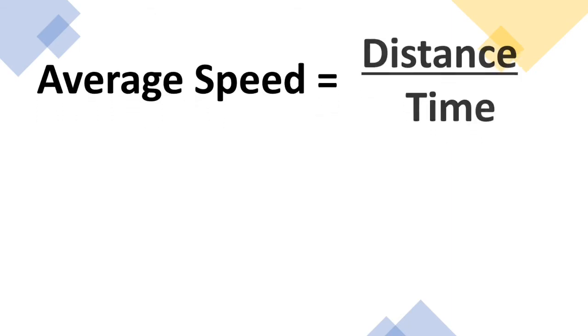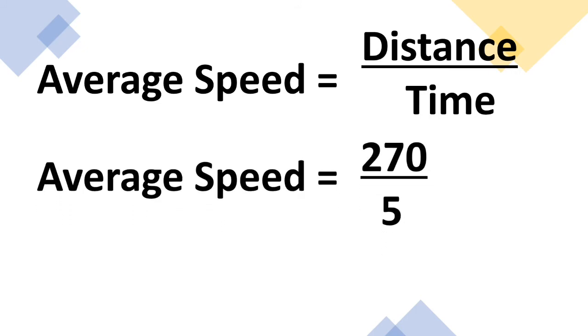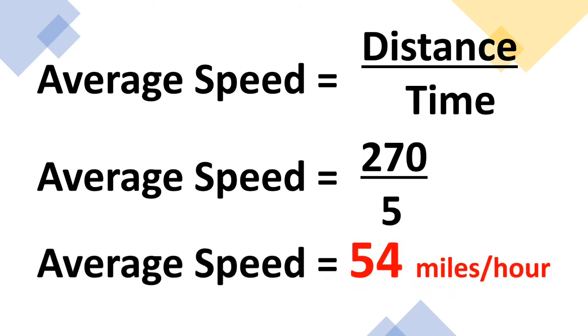So our formula for this problem is average speed equals distance divided by time. So we have 270 divided by 5, and we got 54 miles per hour.